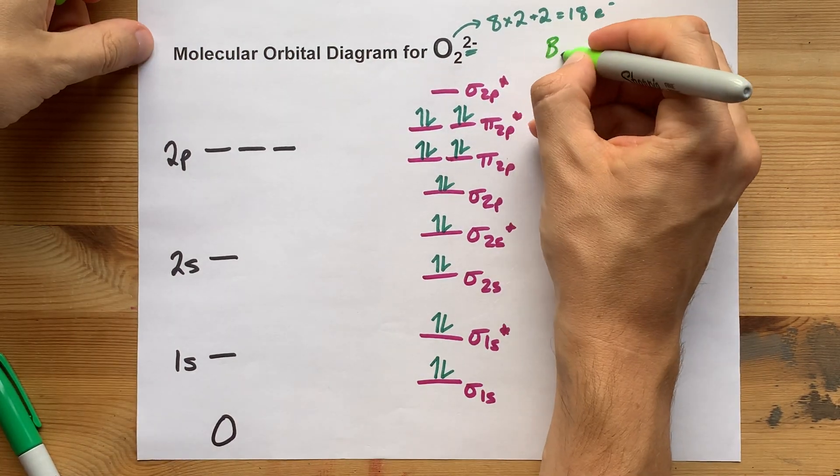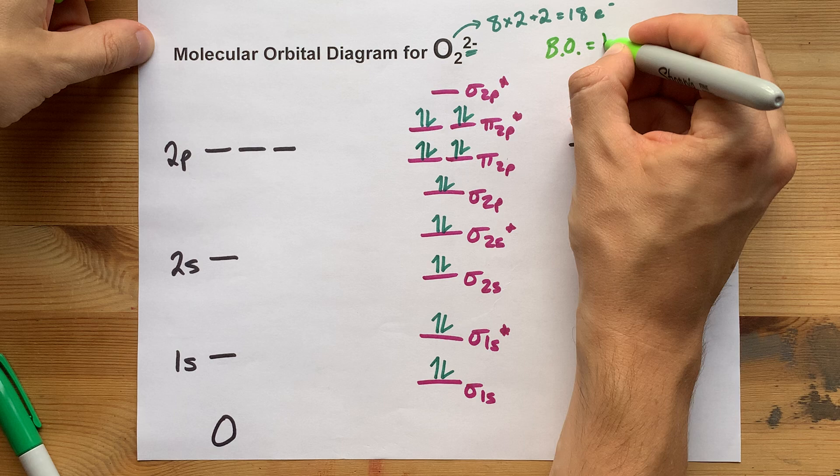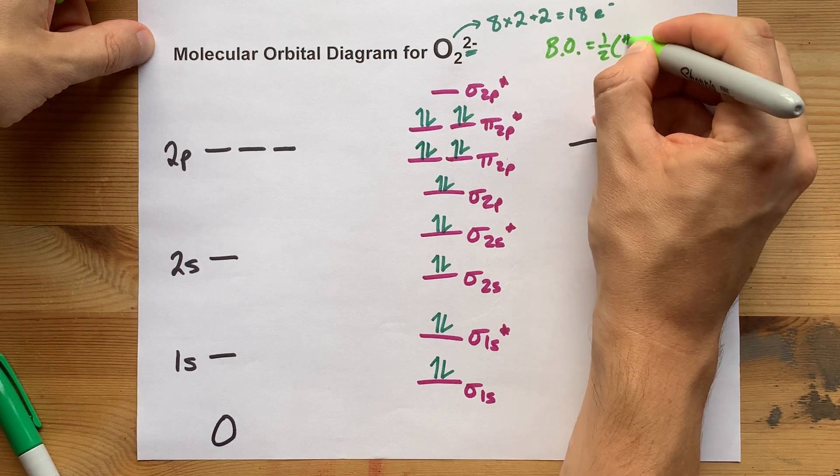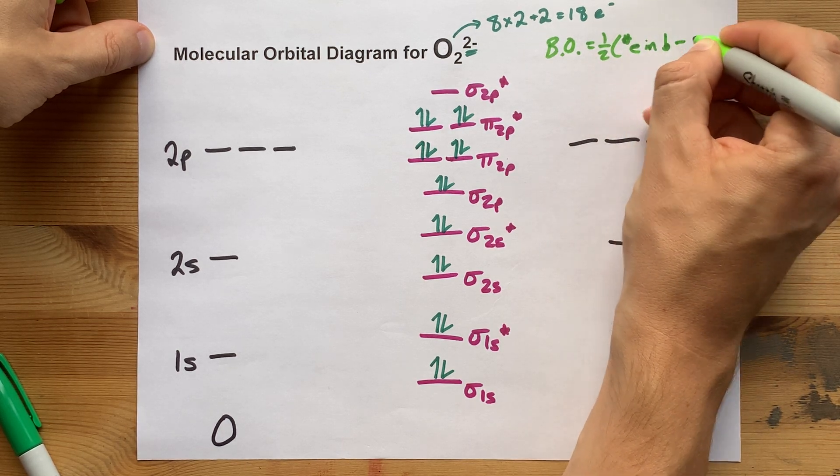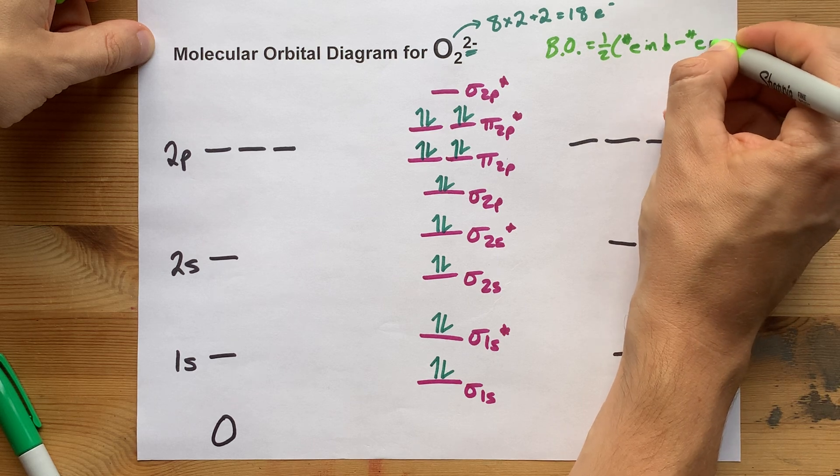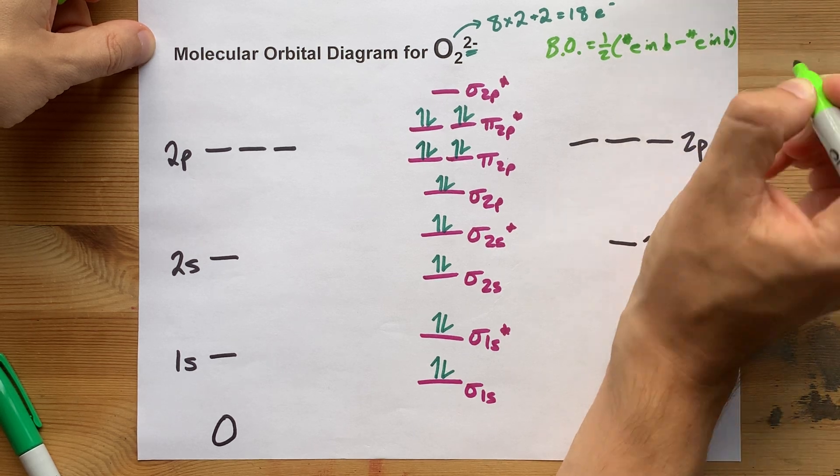Your teacher may be asking you for the bond order, which is one half of the number of electrons in bonding orbitals minus the number of electrons in antibonding orbitals.